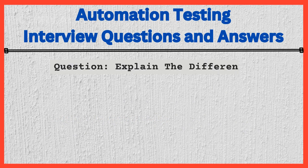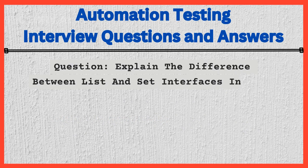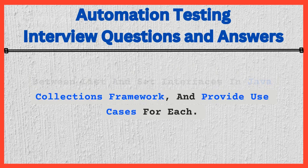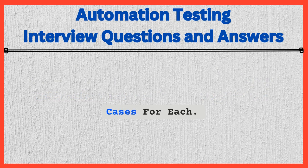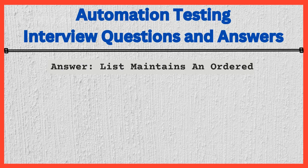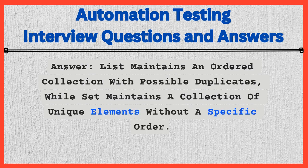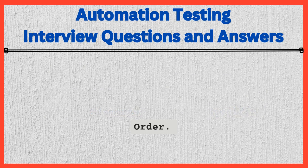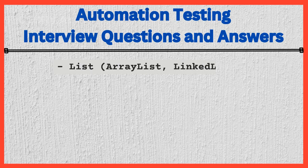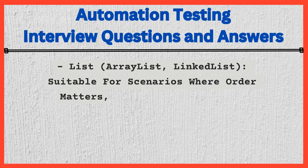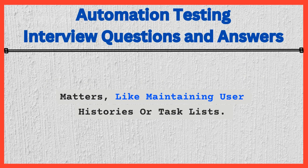Question: Explain the difference between List and Set interfaces in the Java Collections Framework, and provide use cases for each. Answer: List maintains an ordered collection with possible duplicates, while Set maintains a collection of unique elements without a specific order. List — ArrayList, LinkedList — suitable for scenarios where order matters, like maintaining user histories or task lists.